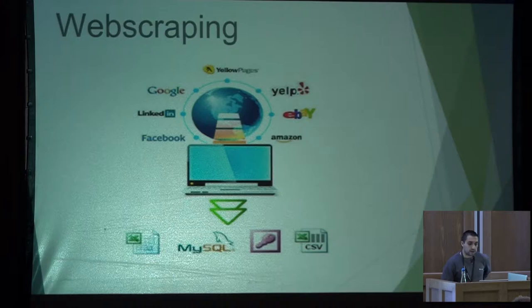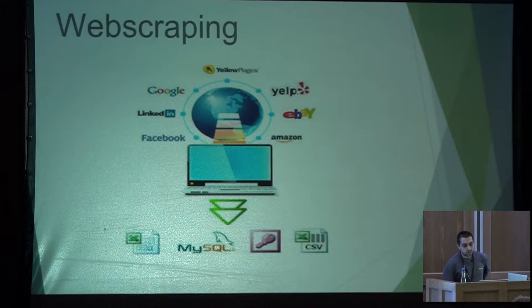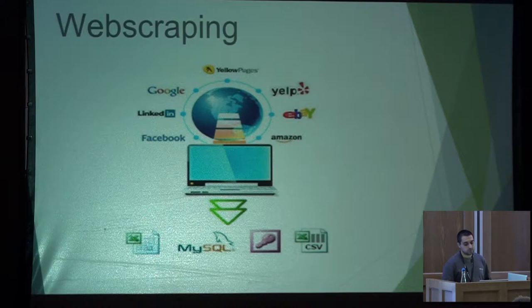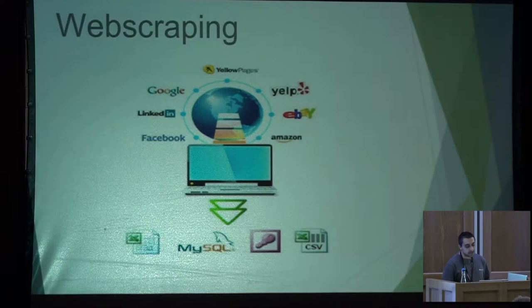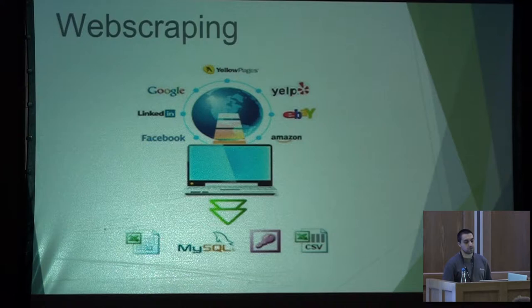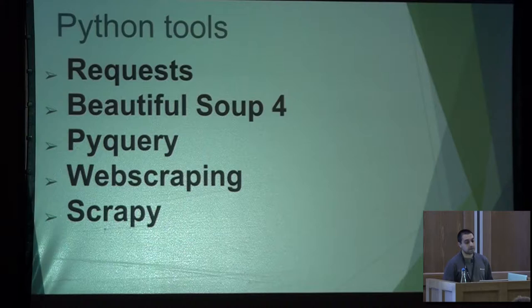We are all talking about web scraping. The web is big, and there are a lot of services. The idea with web scraping is that we want to extract data from web pages automatically. We need to go through a process for extracting the data that web services and pages provide. Basically, what we have to do is extract the data, save it, and process it later — we can save this information in a database and export the data in JSON or other formats.